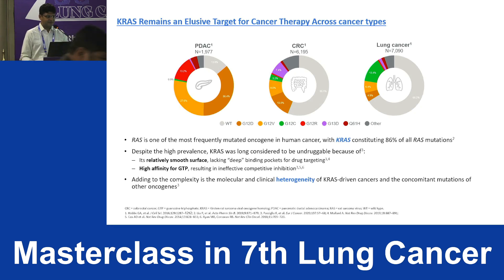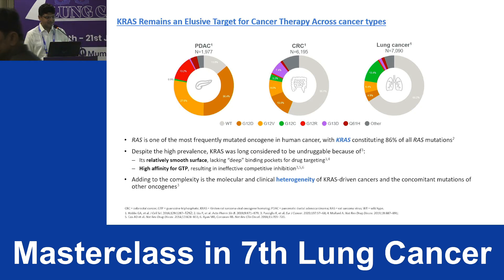Despite its high prevalence, KRAS has been undruggable for a very long time. This is due to a relatively smooth surface which lacks deep binding pockets for drug targeting, and second, its very high affinity for GTP, resulting in ineffective competitive inhibition.